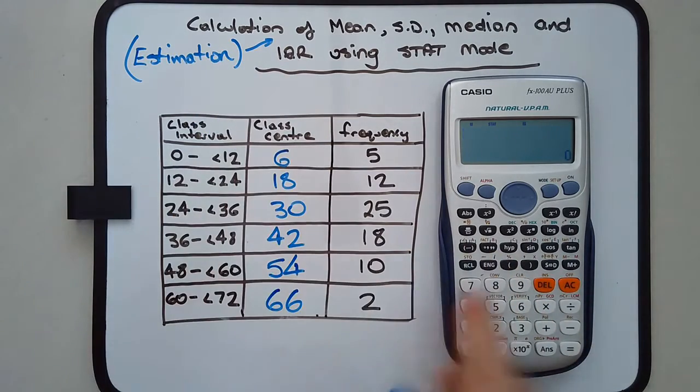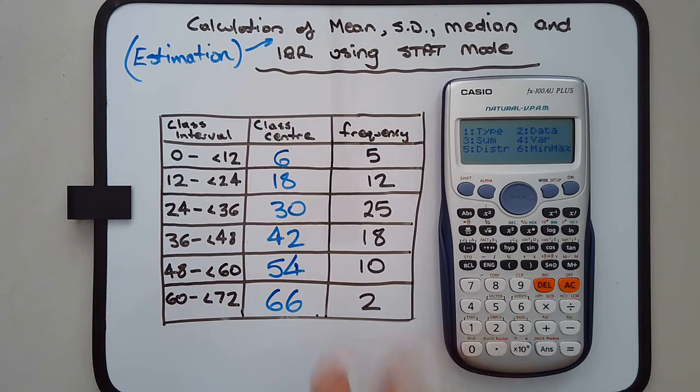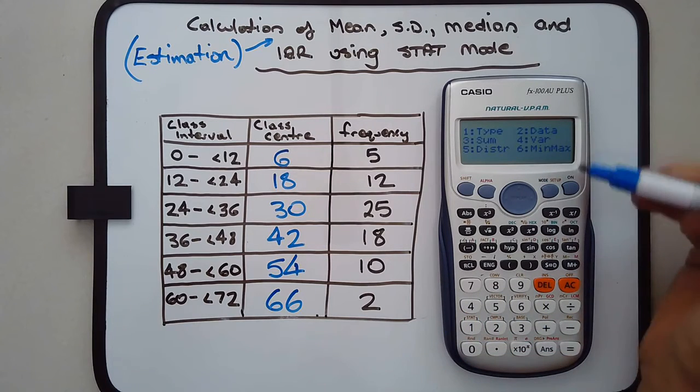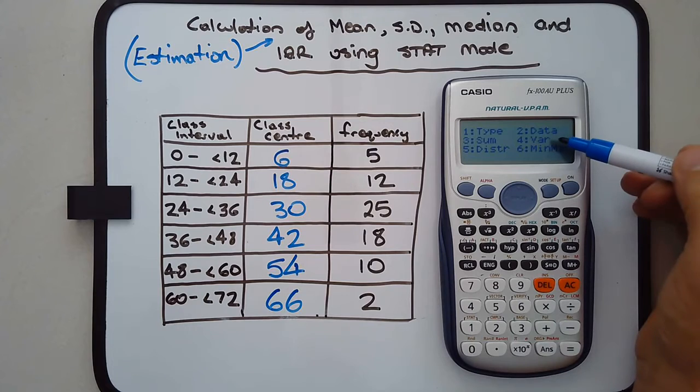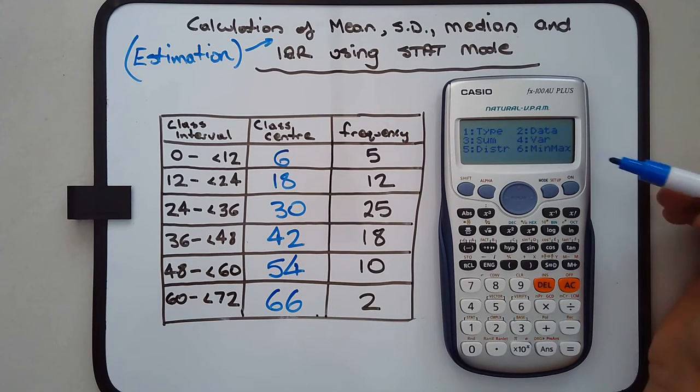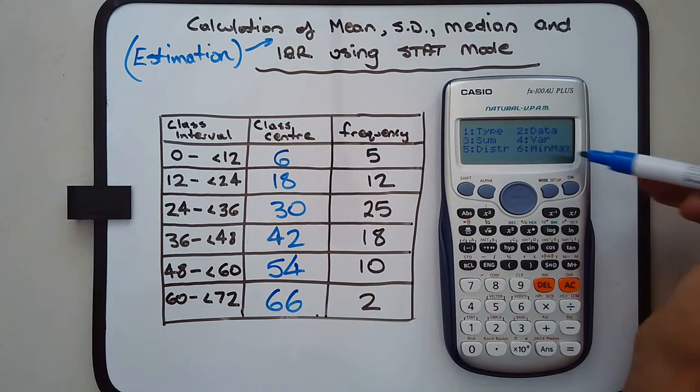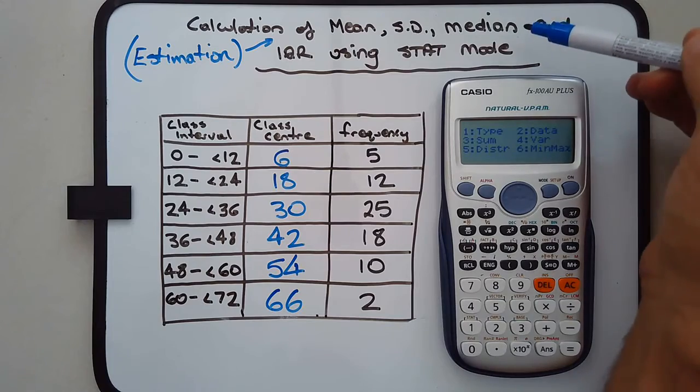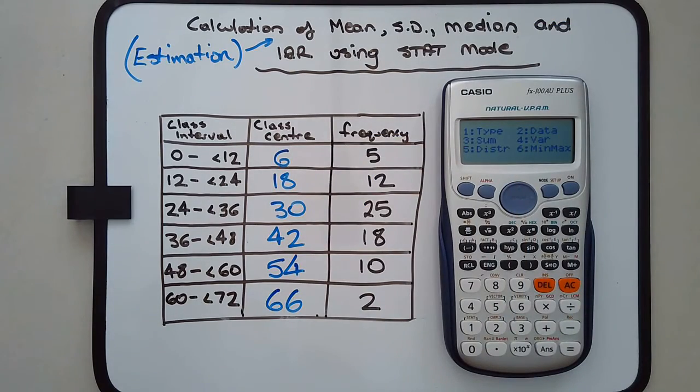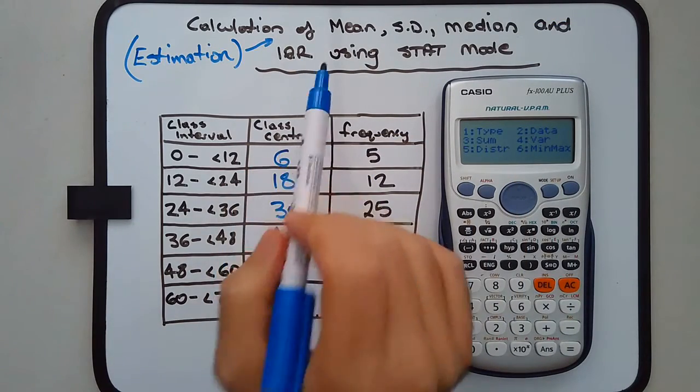Now let's estimate the mean. Press shift one - you use shift one a lot. This is the stat menu. That brings up a few options. The two that are most valuable to us are VAR and min-max. VAR is for the mean and standard deviation. Min-max is for the median and interquartile range.